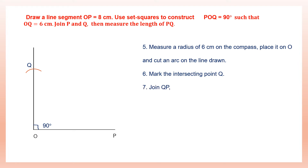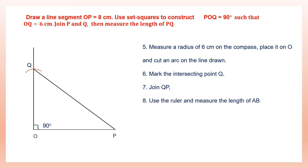Now join Q and P. P is here and Q is here, so let's join PQ. Now the last part of the question: measure the length of PQ. Place your ruler along QP and get the measurement. We have drawn the line segment, constructed angle POQ of 90 degrees, joined PQ, and now you need to measure the length of PQ.